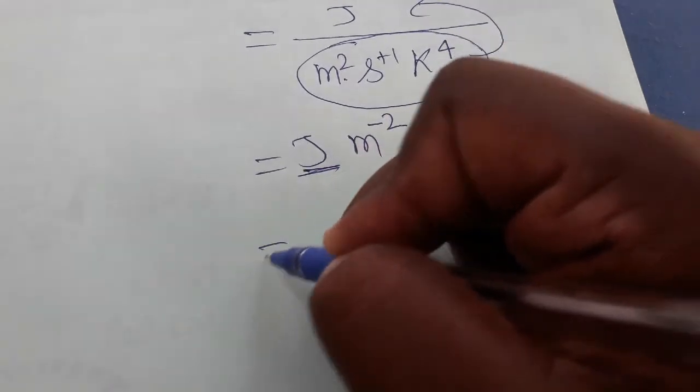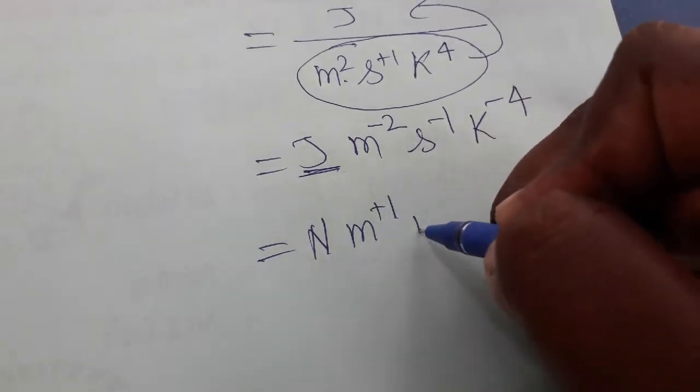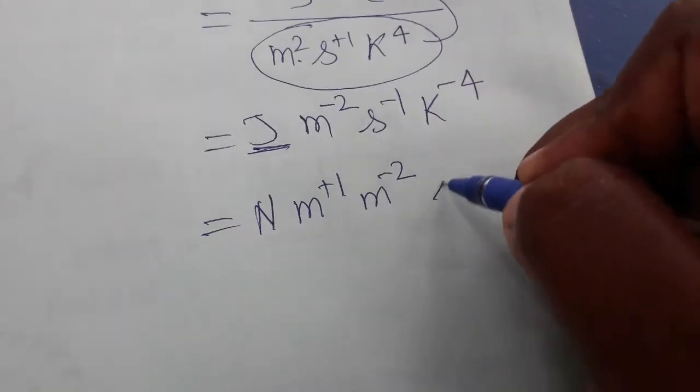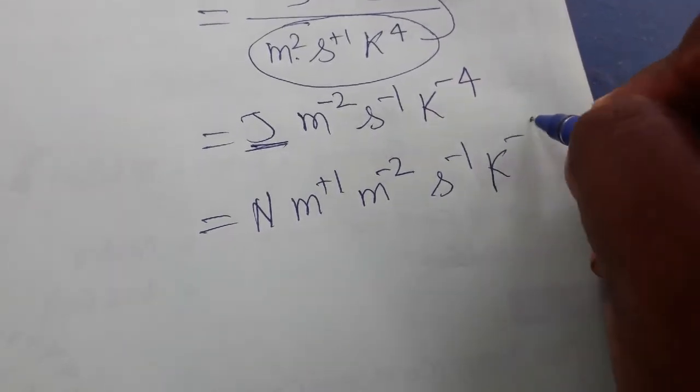Joule is a Newton meter, so Newton meter power plus 1, meter minus 2, second minus 1, Kelvin power minus 4.